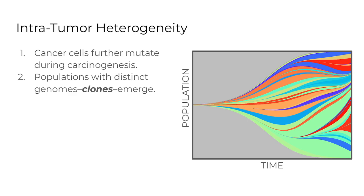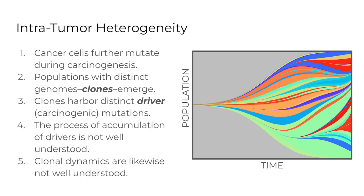It's also typical to refer to groups of cells with the same or similar genomic profile as clones. The term is not completely well defined. We are using the term clone to refer to a group of cells which share the set of so-called driver mutations — the mutations that are somehow affecting their ability to grow or to compete with other cells inside of the same tumor.